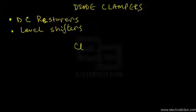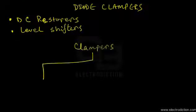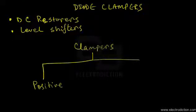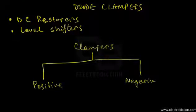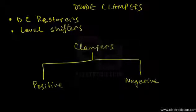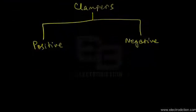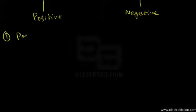Depending upon the function, diode clampers can be divided into two categories. First is the positive clampers, in which the input AC signal is shifted to positive voltage levels. Then we have the negative clampers, where the input AC signal is provided with a negative reference voltage and shifted to the negative voltage signal levels. With that said, we move on to the circuit of a positive clamper.